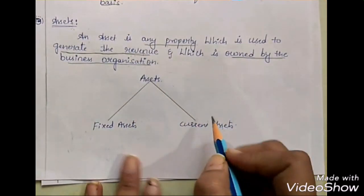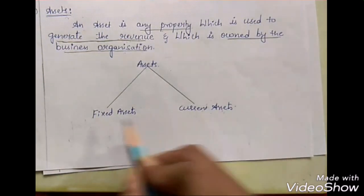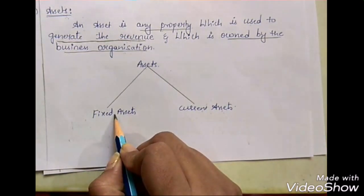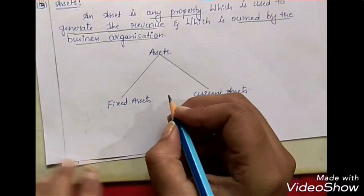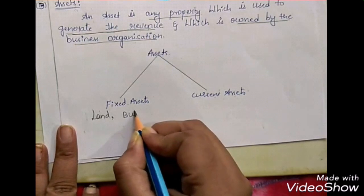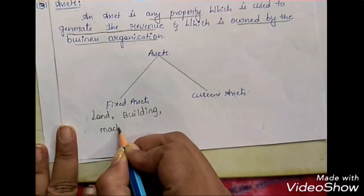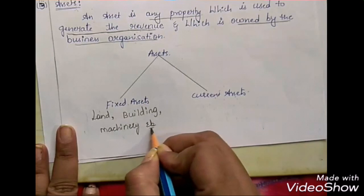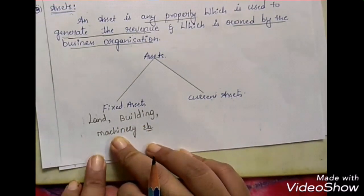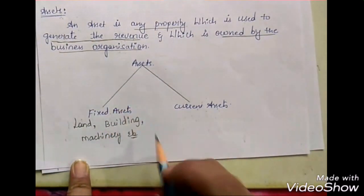Assets can be further classified into two parts: fixed assets and current assets. Fixed assets are those assets which are going to stay in the company for a longer period of time. Examples of fixed assets are land, building, and machinery. These assets cannot be easily replaced, so they are known as fixed assets of the company.